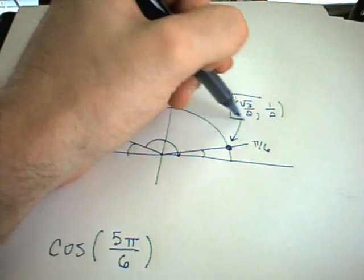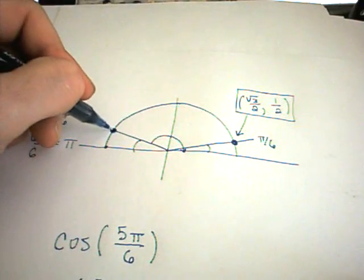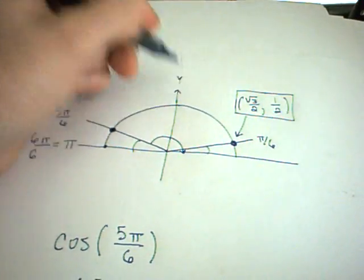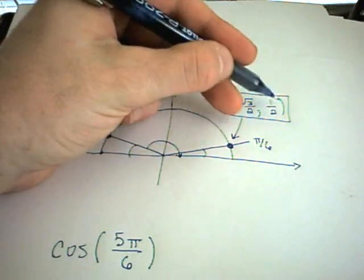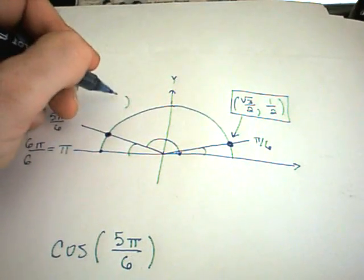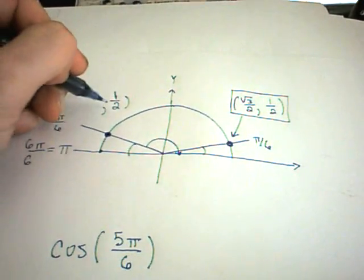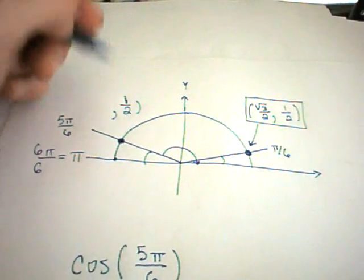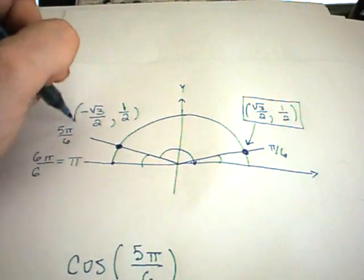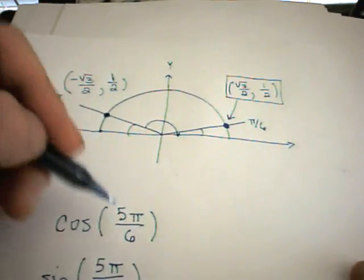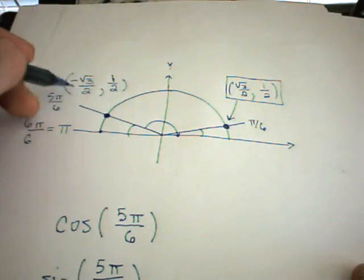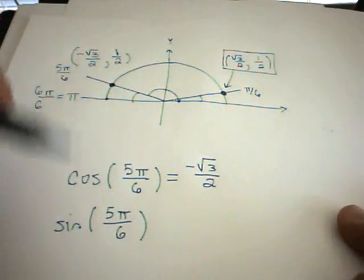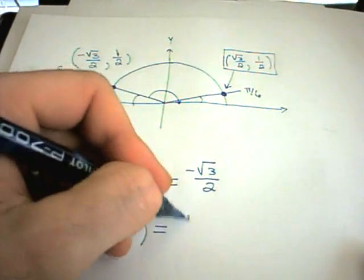If you know the values that go with π over 6, you can easily get the values for 5π over 6. They're the same numerical values, but you have to adjust the signs. The y-coordinate is still 1 half because I'm still above the x-axis, so it stays positive. But I'm now to the left of the y-axis, so the x-coordinate is negative square root of 3 over 2. Cosine of 5π over 6 is therefore negative square root of 3 over 2, and sine of 5π over 6 is simply 1 half.